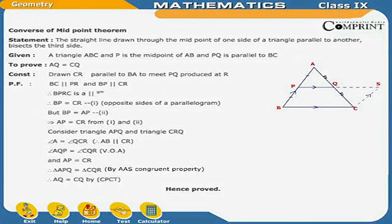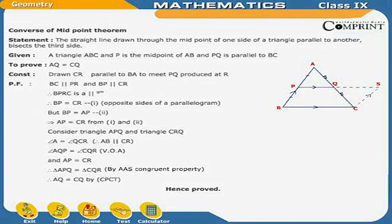Inverse of Midpoint Theorem. Statement: The straight line drawn through the midpoint of one side of a triangle, parallel to another side, bisects the third side. Given: a triangle ABC where P is the midpoint of AB and PQ is parallel to BC. To prove: AQ is equal to CQ. Construction: Draw CR parallel to BA to meet PQ produced at R.